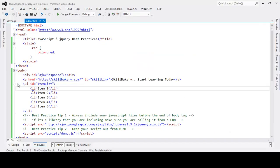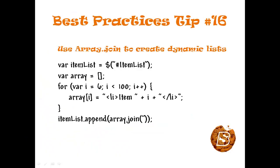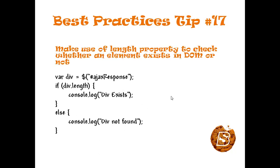Tip number sixteen: we should make use of Array.join to create dynamic lists. For instance, we have a ul with ID 'itemList' containing five list items. To add more, first cache the element in a variable, then create an array, initialize a loop from index 6 to less than 100, push list item values into the array, and use the join function to append the whole list to 'itemList' using the append method.